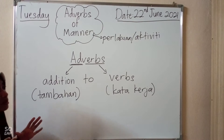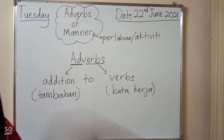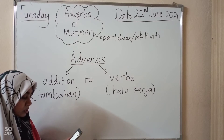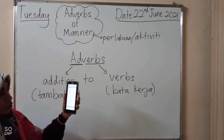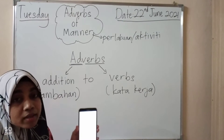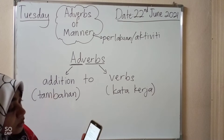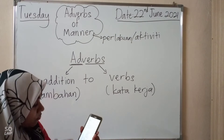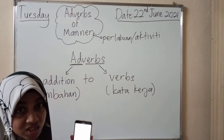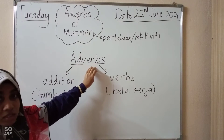Bagaimana sesuatu activity tu dilakukan oleh seseorang. Please refer to your PDCA module page 171. You will have a set of notes — satu set notes yang memberi contoh-contoh. You can read some examples given by the teachers who wrote the book. You can see 24 verbs — ada 24 kata kerja — dengan some related adverbs to describe the verbs.